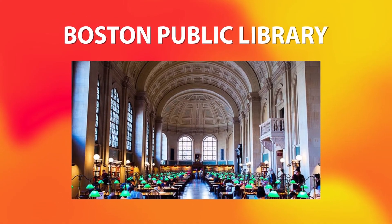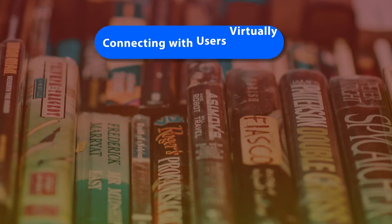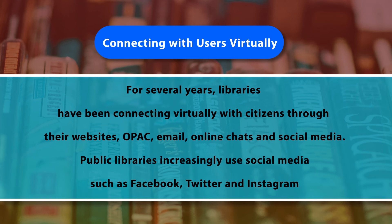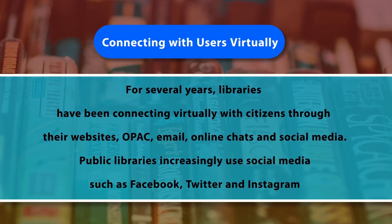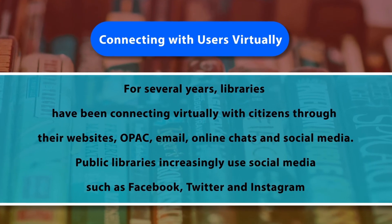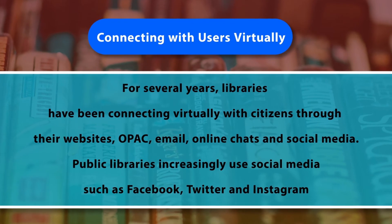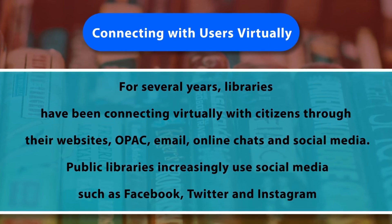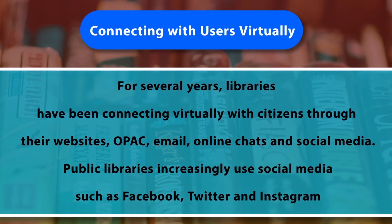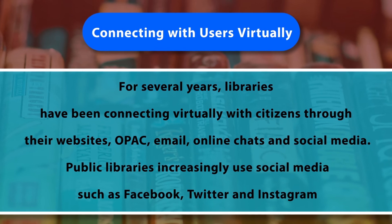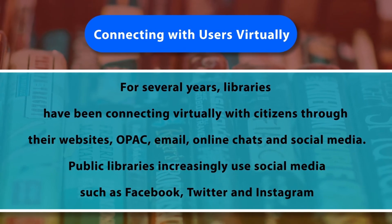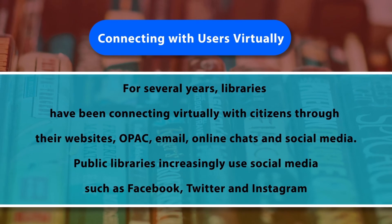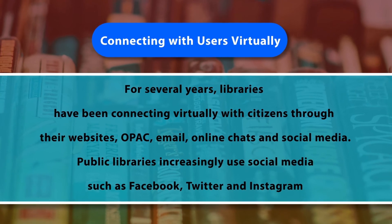These days, public libraries are also using social media and connecting with users virtually. For several years, libraries have been connecting virtually with citizens through their websites, OPAC, email, online chats, and social media. Public libraries increasingly use social media such as Facebook, Twitter, and Instagram. Facebook appears more useful for connecting with locals about specific events, while Twitter has been an engaging forum for discussing books and libraries on a wider regional level. So public libraries use all types of social media to provide services to those not regularly visiting the library.